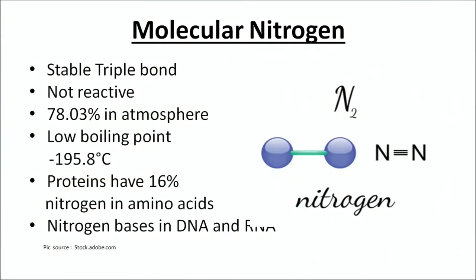We will first start with a description of the nitrogen molecule. As shown in this picture, the nitrogen molecule is made up of two atoms bonded by a triple bond, which is a stable triple bond and hence not reactive. The percentage of nitrogen in the atmosphere is 78.03 percent and it has a low boiling point of minus 195.8 degrees centigrade. There are two chief molecules in every living cell — proteins and nucleic acids — which contain nitrogen. Proteins have 16 percent nitrogen, and there are nitrogen bases in DNA and RNA.